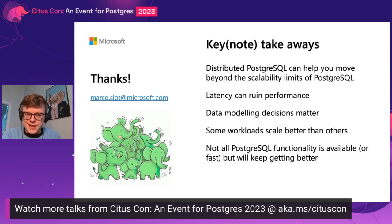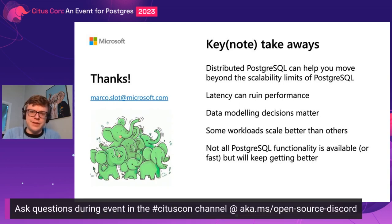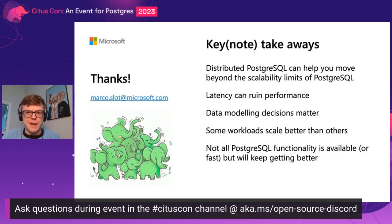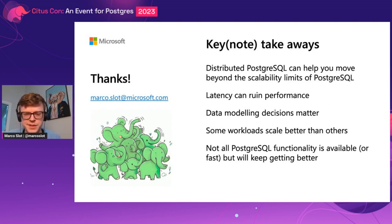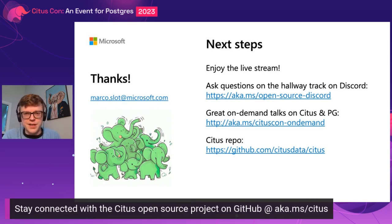Thank you very much for listening. Some of the key takeaways: distributed Postgres helps you run away from scalability problems, but latency can absolutely devastate performance. Your data modeling — whether you choose it or the database chooses it — matters a lot, and that means some workloads will work better than others. You should expect that some Postgres functionality is not available when you distribute your tables, but these will all get better over time in all the implementations. Next steps: enjoy the live stream, I'll be on the hallway track all day on Discord in the next few days. If you want to start using Citus, check our GitHub page for docs and other resources to help you get started.